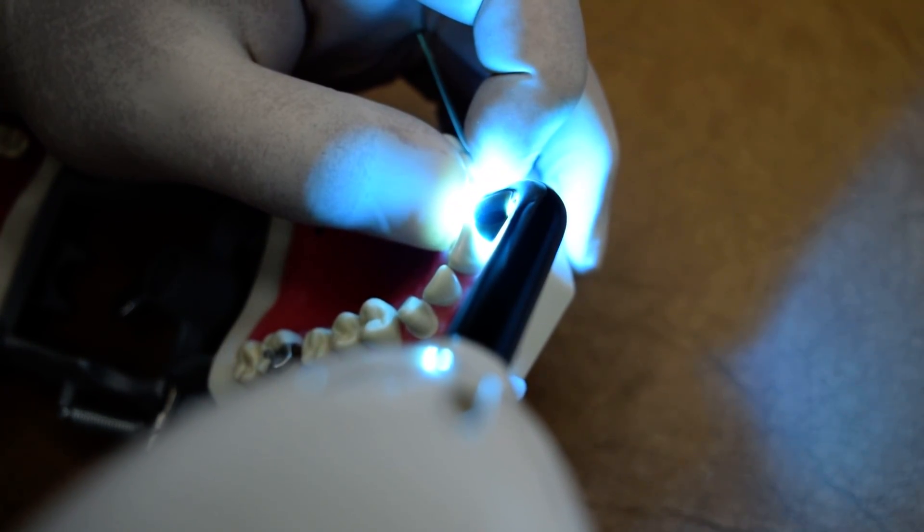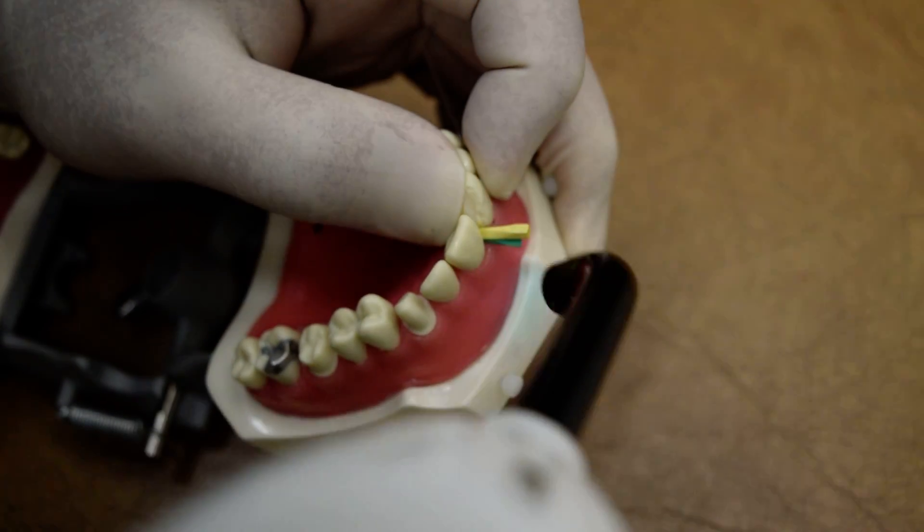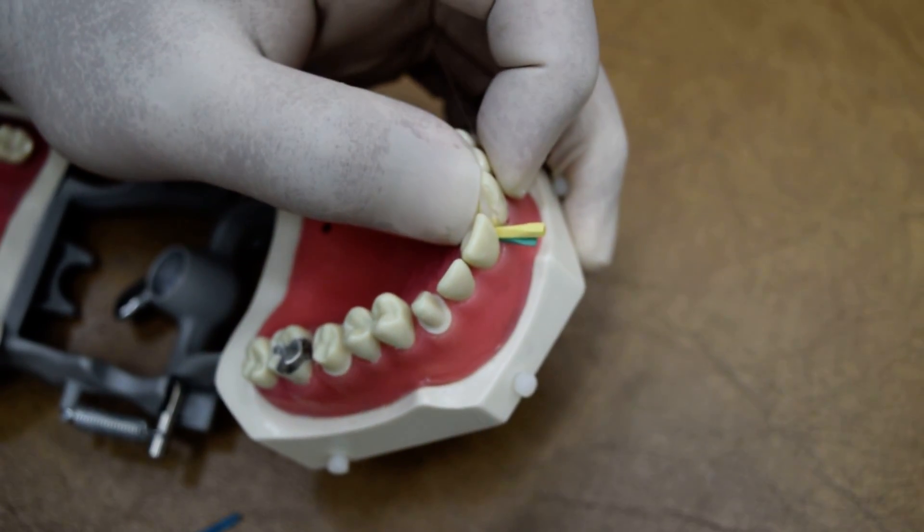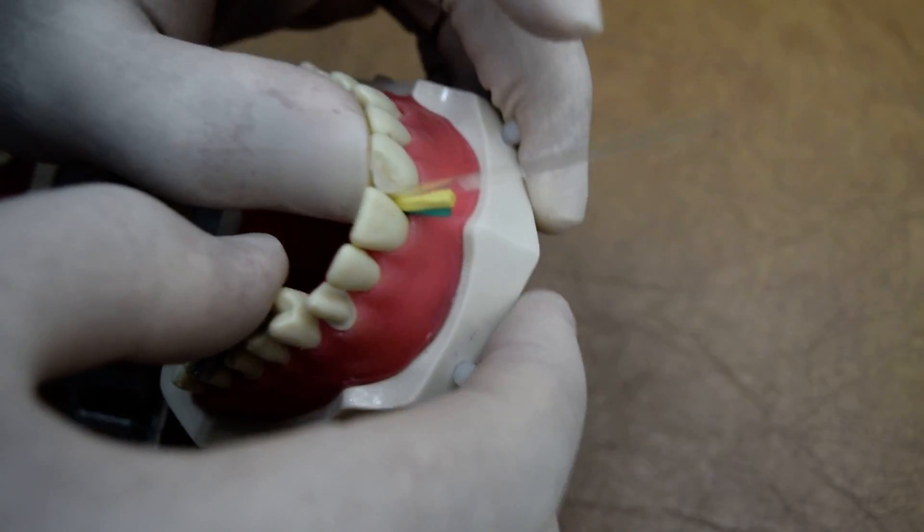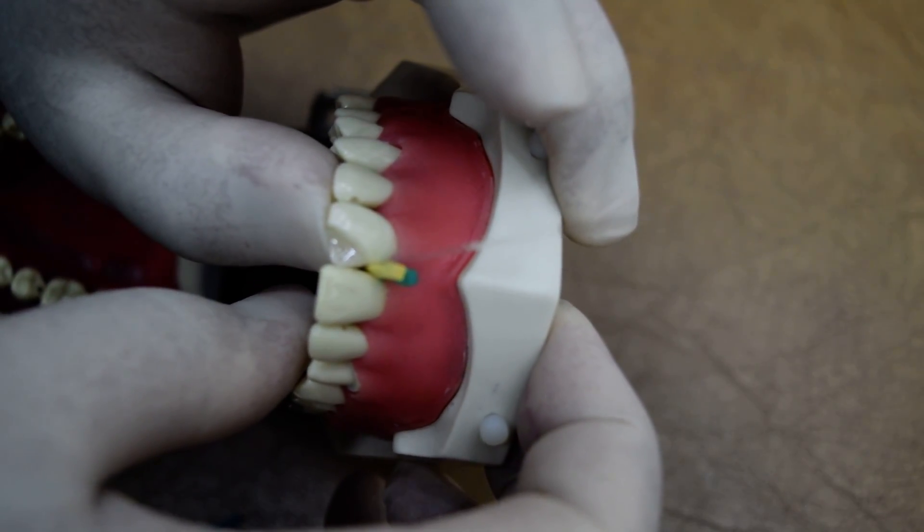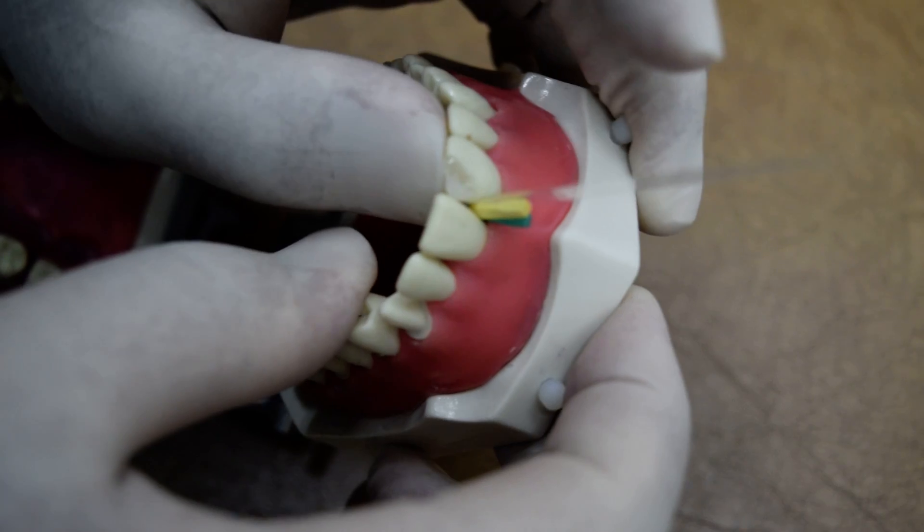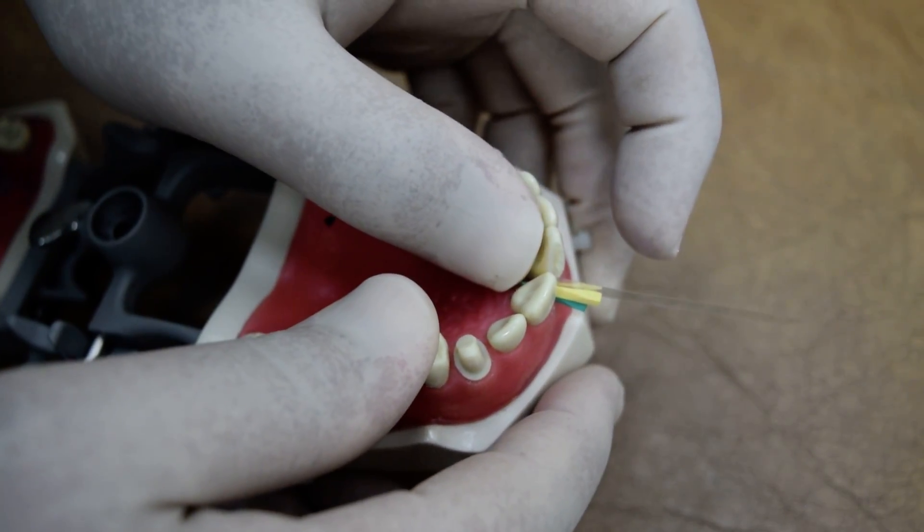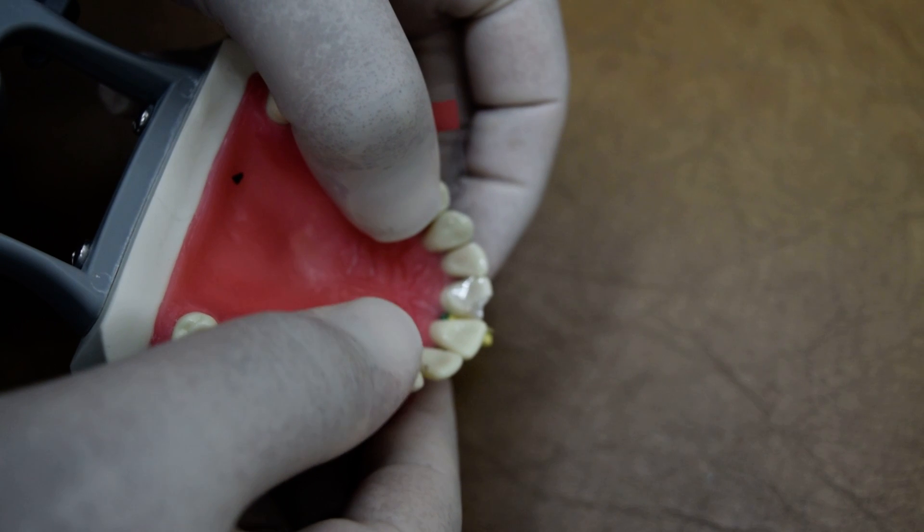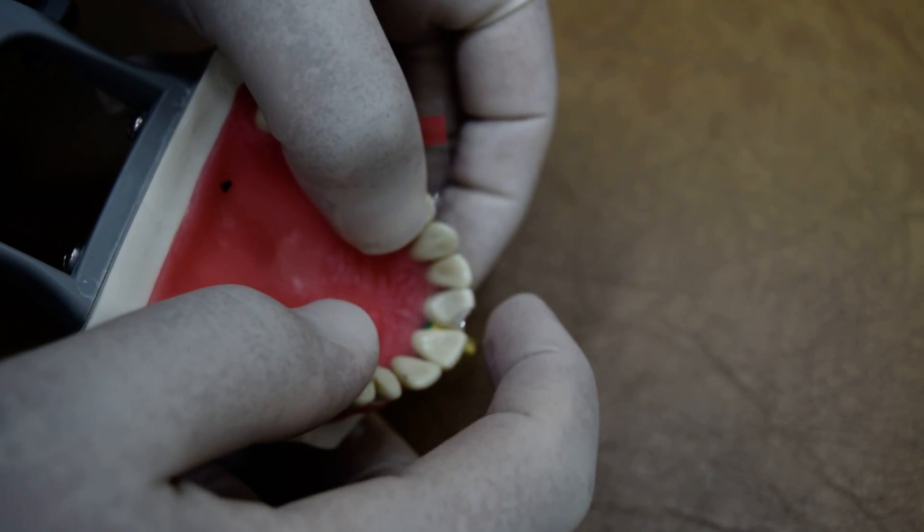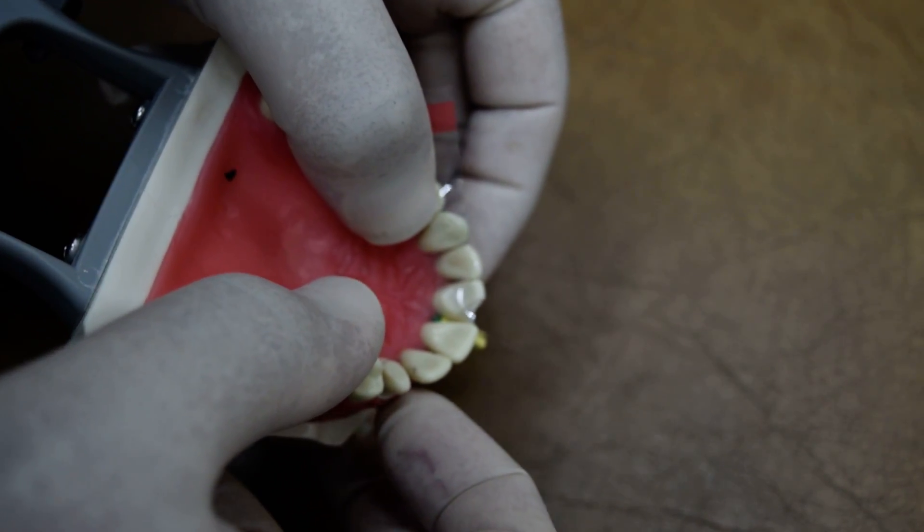This first layer should include the palatal surface and also part of the mesial surface. As you can see, the contact is already built and also the palatal surface, but incisally it's not yet done.